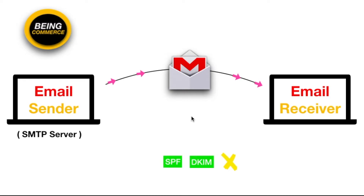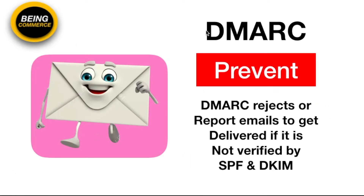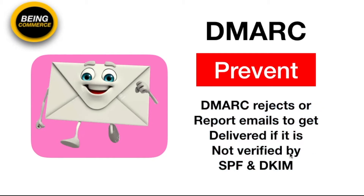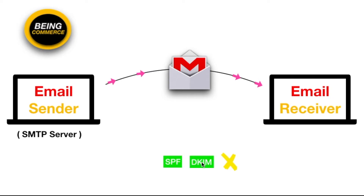Let me give you a simple scenario. Suppose there is an email sender and an email receiver. For some reason, your SPF and DKIM are not working and have not verified the email message — that can be a dangerous thing for email receivers. DMARC comes into action and immediately rejects or reports emails that have not been verified by SPF and DKIM, stopping them before they reach the email receiver.